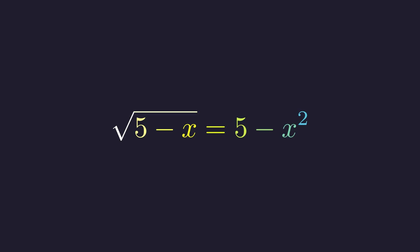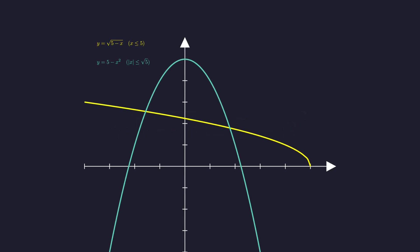Instead, let's find a more elegant path by uncovering its hidden structure. If we plot the left and right sides as two separate functions, we see they intersect at two points.